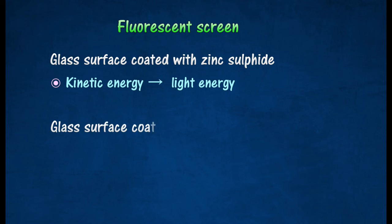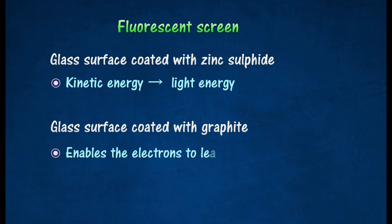The inside surface of the rest of the tube is coated with a thin layer of graphite. This layer enables the electrons to leak back to the power supply after hitting the screen.